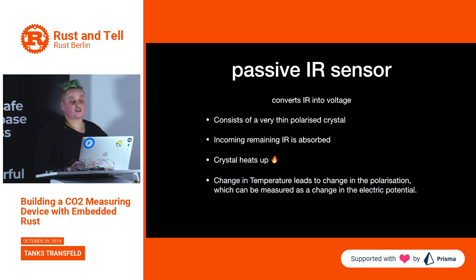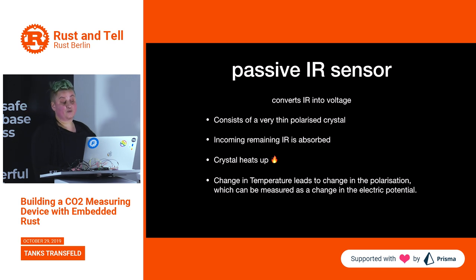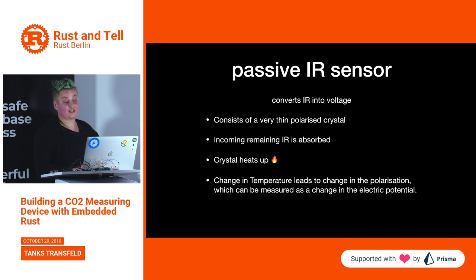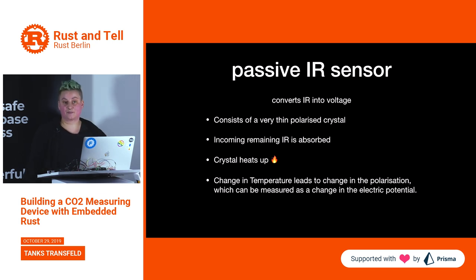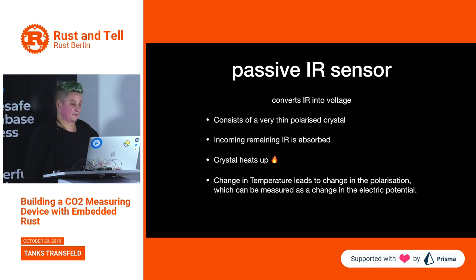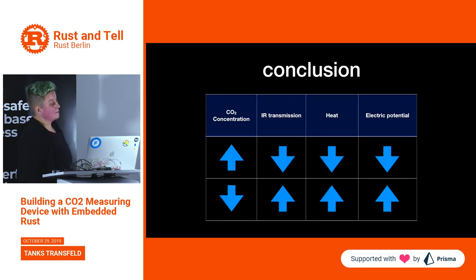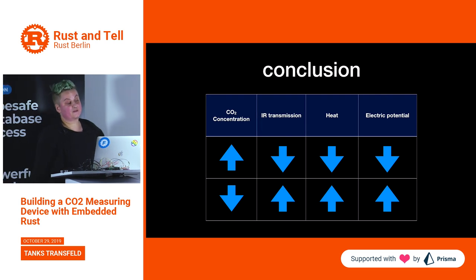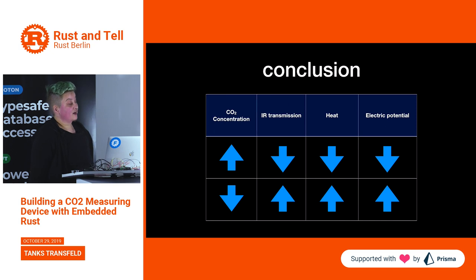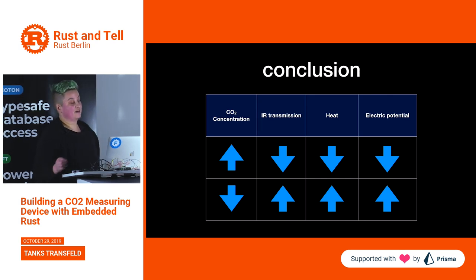After the bandpass filter there's the passive infrared sensor, which converts remaining infrared into voltage. It consists of a very thin polarized crystal; incoming infrared is absorbed and the crystal heats up — with the same mechanism as the CO2 molecule — because ions in the crystal start vibrating. The change in temperature leads to a change in polarization of the crystal, measurable as a change in electric potential. So: when CO2 concentration goes up, infrared transmission goes down, the crystal heats less, and electric potential goes down. When CO2 is low, transmission goes up, the crystal gets warmer, and there is a higher electric potential.